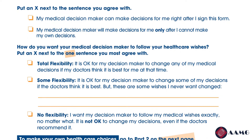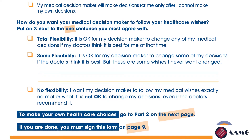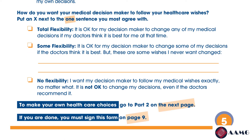Put an X next to one of the following: Total flexibility — it is okay for my decision maker to change any of my medical decisions if my doctors think it is best for me at that time. Some flexibility — it is okay for my decision maker to change some of my decisions if the doctors think it is best, but there are some wishes I never want changed. No flexibility — I want my decision maker to follow my medical wishes exactly no matter what; it is not okay to change my decisions even if the doctors recommend it.